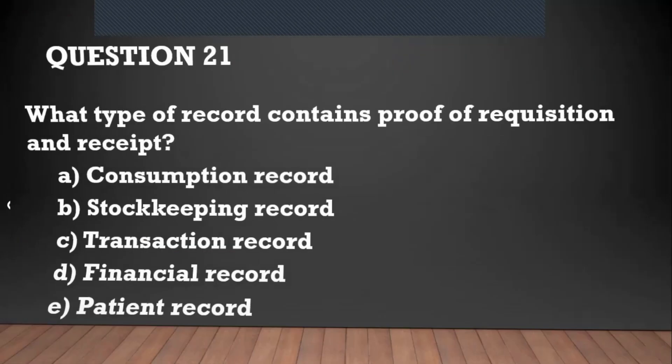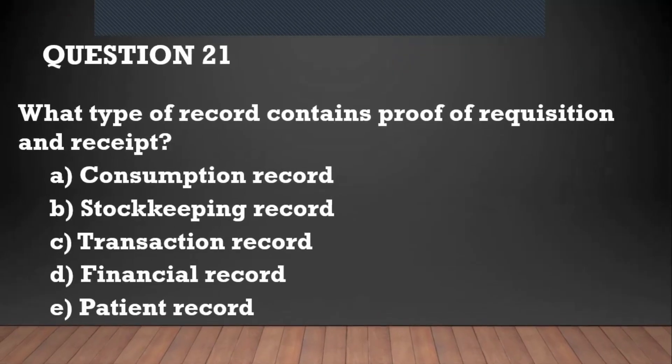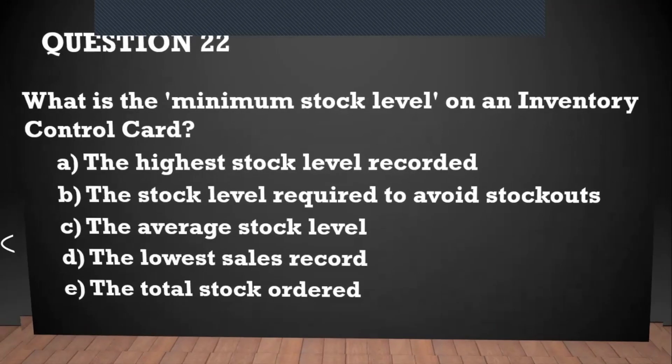Question number twenty-four: what type of record contains proof of requisition and receipt? When you have things that have to do with requisition, issues, and all that, that is a transaction record — any day, any time. Question number twenty-two: what is the minimum stock level on an inventory control card?